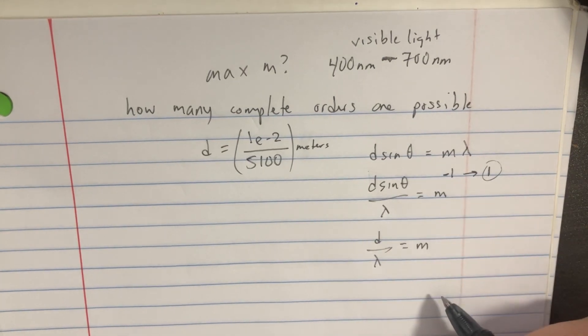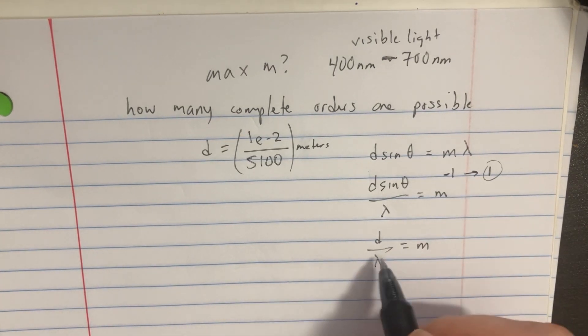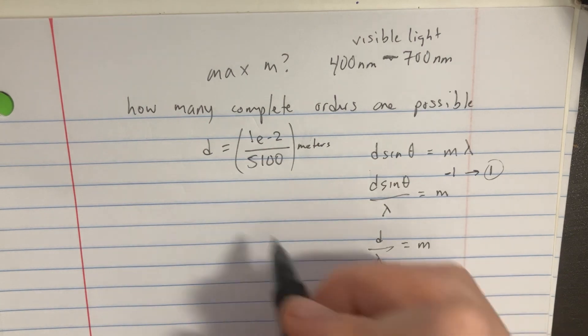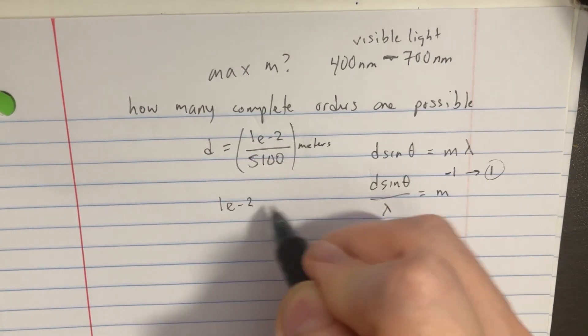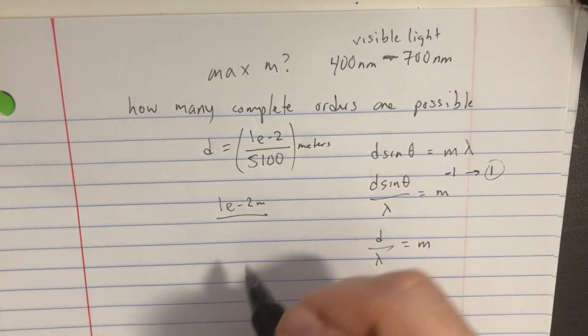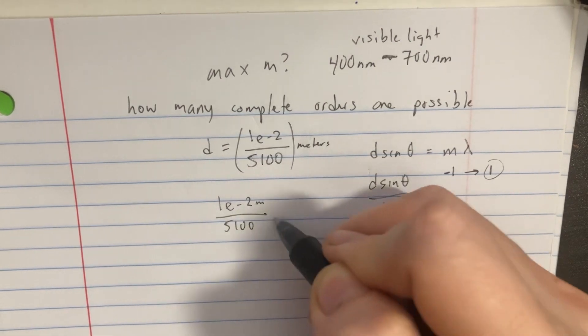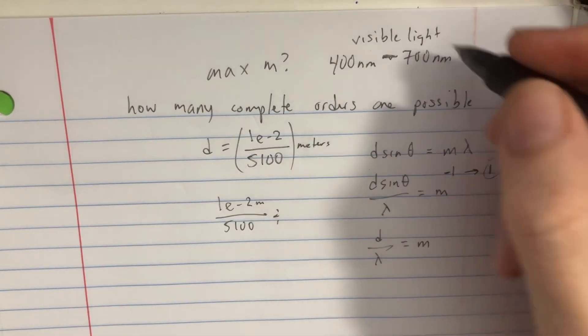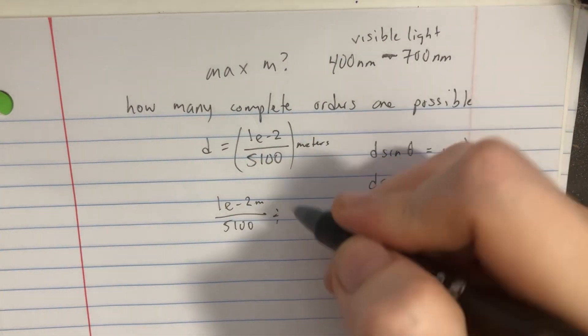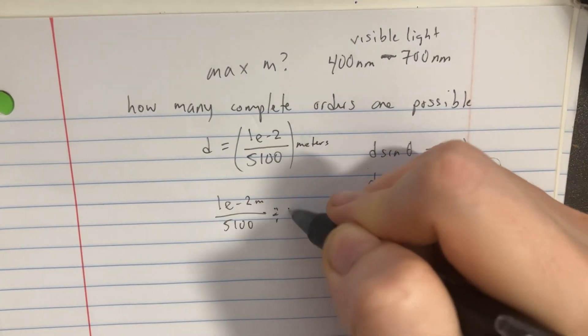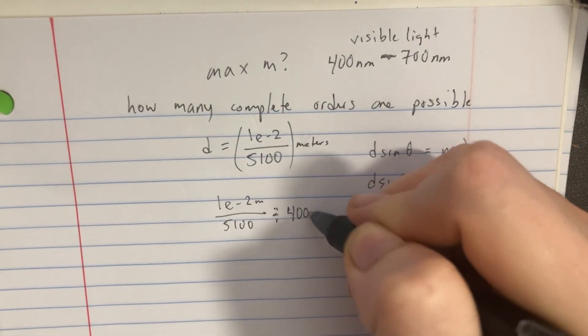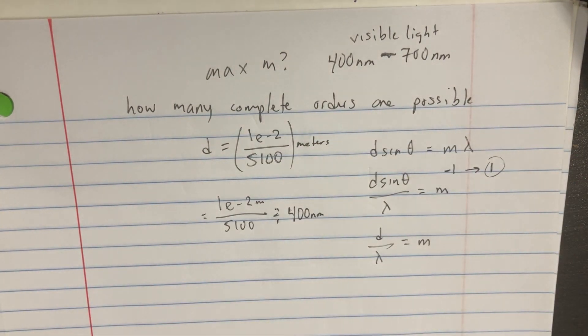So now we kind of got rid of our thetas. So we can work with our distance and we'll call it one E negative two meters divided by five one zero zero. And we want to divide this by our wavelengths. So we kind of have two different ones that we can work with. So we'll start with the four hundred.